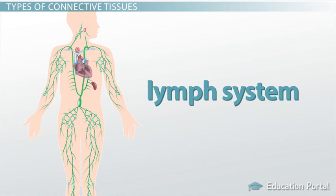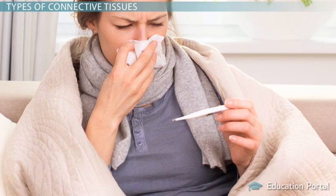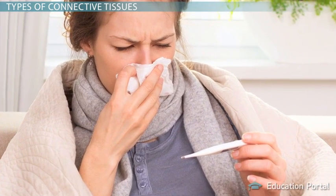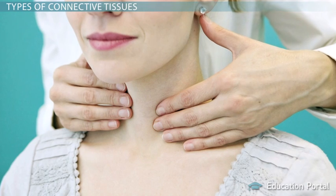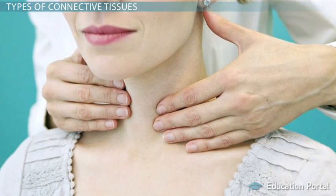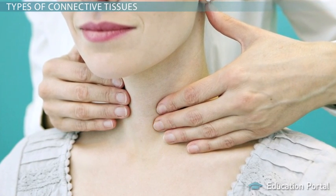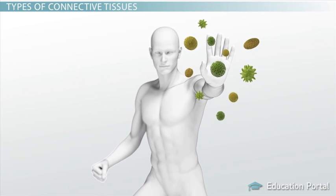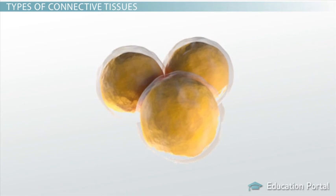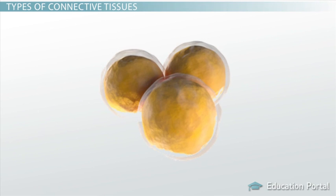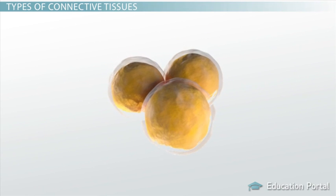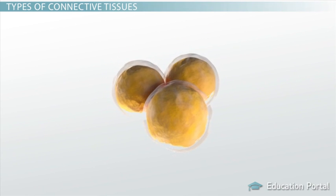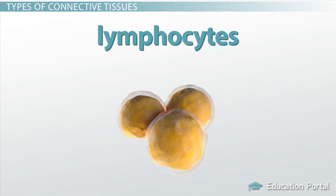Finally, the lymph system is our last type of mature connective tissue. Many of us think of our lymph system when we are sick. We may check for small lumps or swollen lymph nodes under our jaw bones. This system is an integral part of our immune system. Lymph is a fluid connective tissue that consists of a clear fluid and various cells, some of which include lymphocytes, a type of white blood cell.